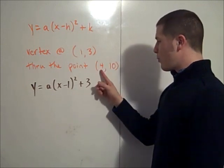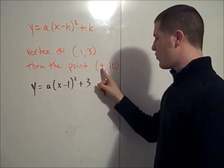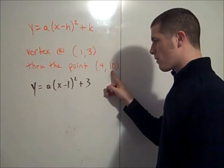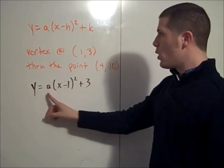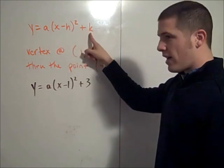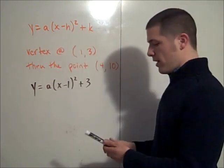Now, my graph has to go through the point (4,10). That means when x is 4, y has to be 10. So we're going to use this point to solve for the a value. We already have the h value and the k value.